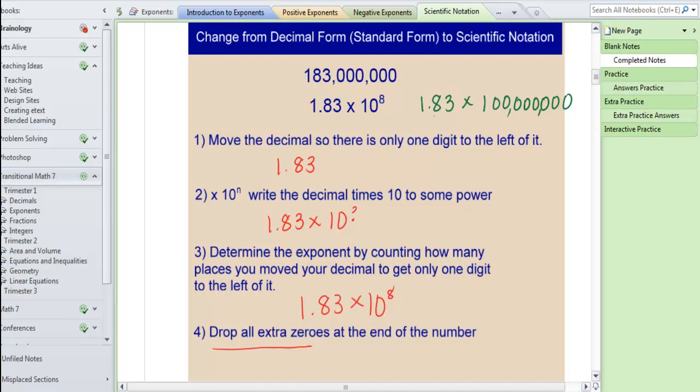So you end up moving that decimal 1, 2, and then 6 more places to move it a total of 8 places. So we get 1, 8, 3, and then 6 more places: 1, 2, 3, 4, 5, 6. And that takes us back to the original number.